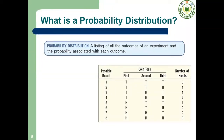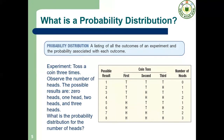Dear cadets, now what is a probability distribution? A list of all outcomes of an experiment and the probability associated with each outcome is called the probability distribution. For example, a coin is tossed three times. We observe the number of heads: zero heads, one head, two heads, three heads.